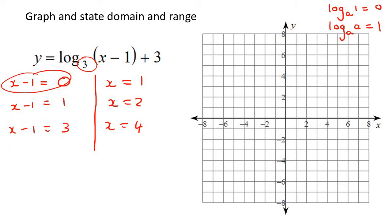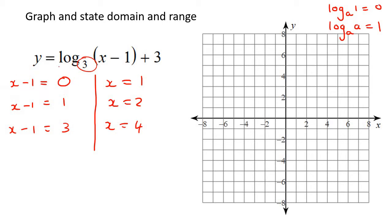The next thing to know is that for the first one, where we made the expression equal to 0, that is your vertical asymptote. So that means that at x equals 1, we're going to have a vertical asymptote.